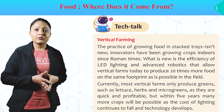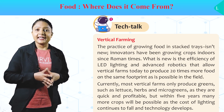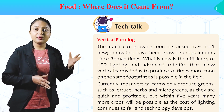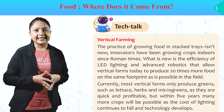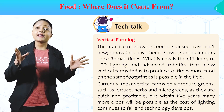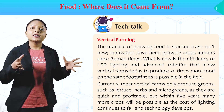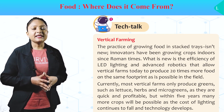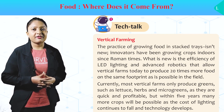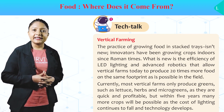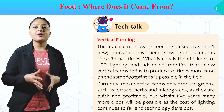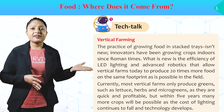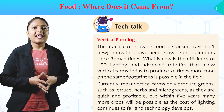Tech Talk: Vertical Farming. The practice of growing food in stacked trays isn't new — innovators have been growing crops indoors since Roman times. What is new is the efficiency of LED lighting and advanced robotics that allow vertical farms today to produce 30 times more food on the same footprint as is possible in the field. Currently most vertical farms only produce greens such as lettuce, herbs and microgreens as they are quick and profitable. But within 5 years, many more crops will be possible as the cost of lighting continues to fall and technology develops.